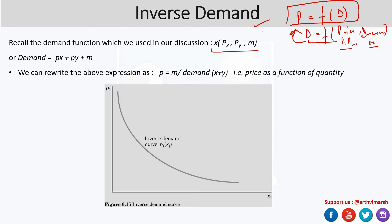For example, if demand for x is a function of px, py, and M — or demand equals px plus py plus M for two commodities x and y — we can rewrite the expression as: price equals M divided by (demand for x plus y). This represents price as a function of quantity.